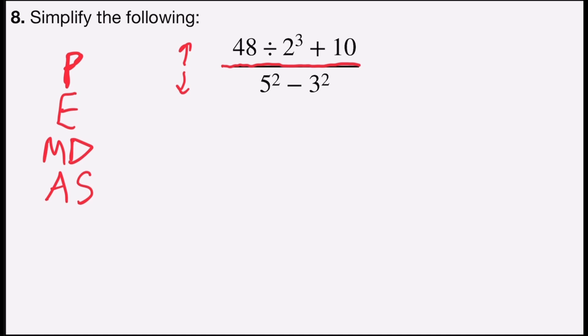So in the numerator, I have no parentheses or other grouping symbols, but I do have the exponent 2 to the 3rd. And so in the numerator, I would have 48 divided by 2 to the 3rd is 2 times 2 times 2, which is 8 plus 10.